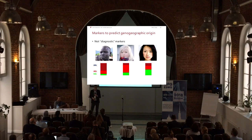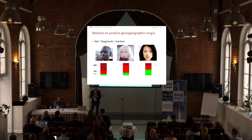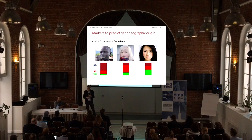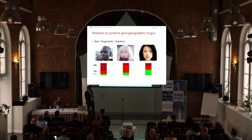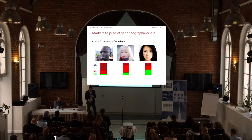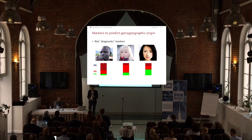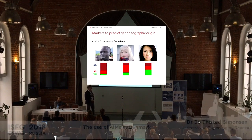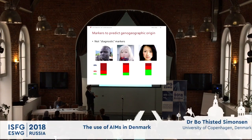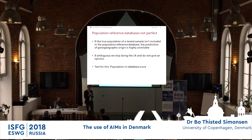You should also know — and probably everyone here already knows — that the markers we use for ancestry are not diagnostic markers. There are frequency differences, which means, to take a constructed example, a type would be found more often in South Africa than in Europe or Asia, but you do find it in Europe or Asia as well. So these are all allele frequencies.